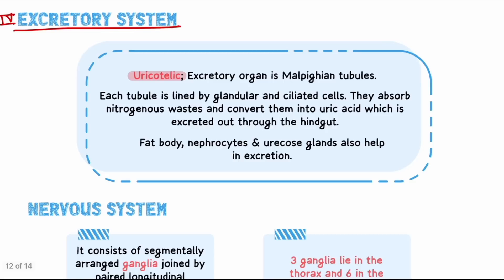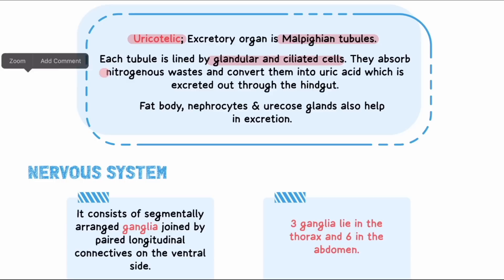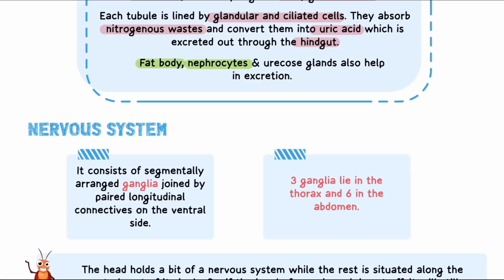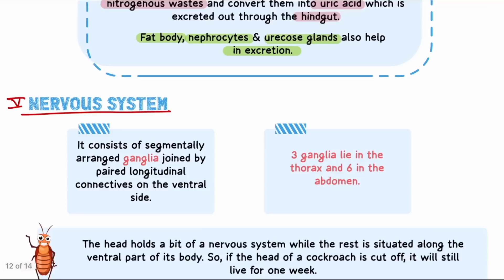For the excretory system: the waste product is uric acid, making cockroaches uricotelic. The excretory organs are Malpighian tubules at the midgut-hindgut junction. These tubules are made of glandular and ciliated cells that absorb nitrogenous waste and convert it to uric acid, which is then released through the hindgut. Other excretory structures include fat body, nephrocytes, and uricose glands, which also assist in excretion.